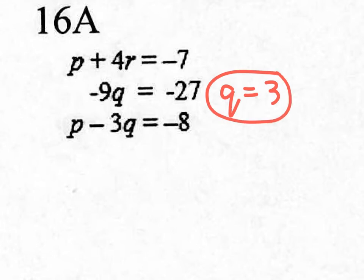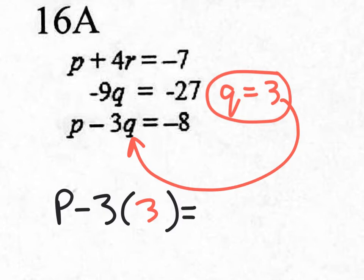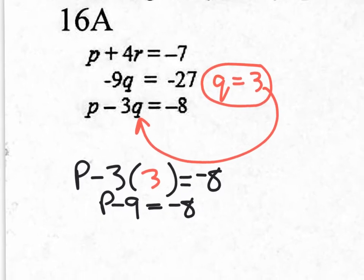That is an answer already. So what can I do with Q equals 3? I can't plug it in up here because there's no Q, but I can plug in Q equals 3 right where the Q is. So I take the 3 and plug it in — it says P minus 3 times 3 equals negative 8. So I really have P minus 9 equals negative 8, and if I add 9 to both sides, P equals 1.